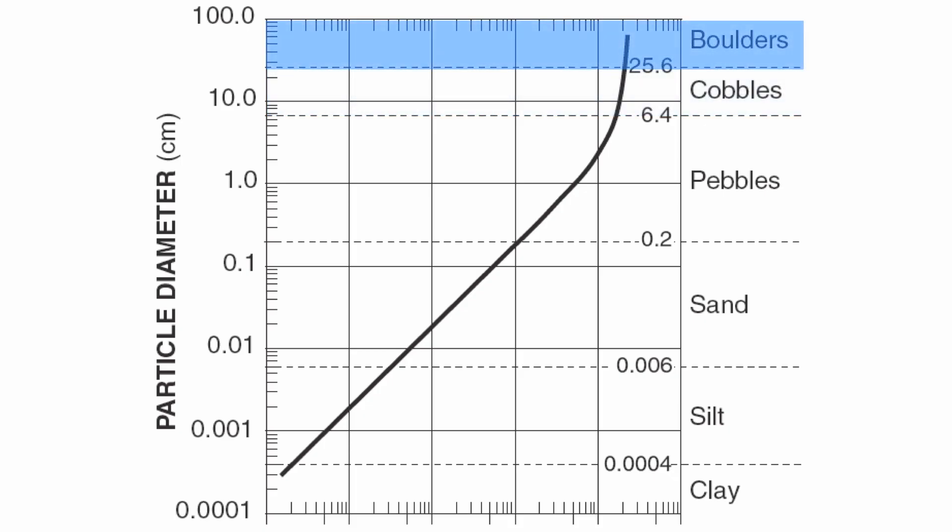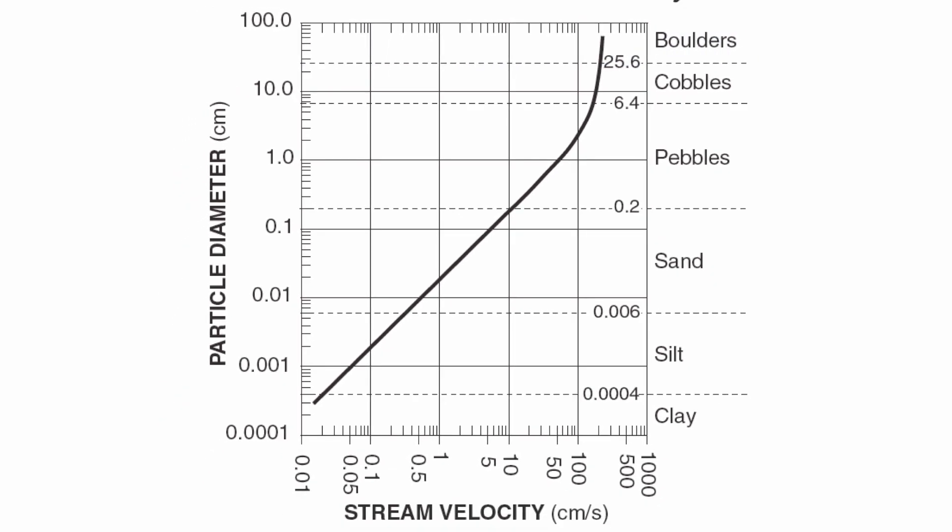So here's how you read it. Sometimes your velocity is given to you. Say, for instance, we have a velocity of 50 centimeters per second. What is the maximum size particle that could be moved by water traveling 50 centimeters per second? Well, you bring 50 centimeters per second straight up, see where it hits your reference line, and you follow it across. And it looks like 50 centimeters per second will be able to move clay, silt, sand, and pebbles with a maximum diameter of about 0.9 centimeters.